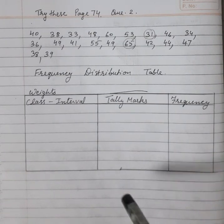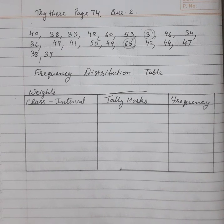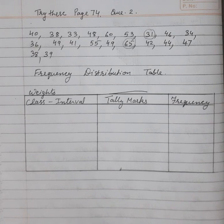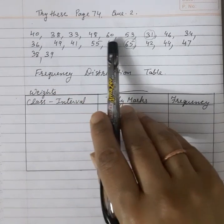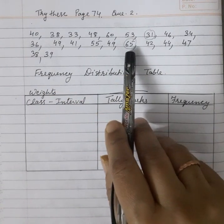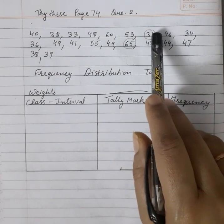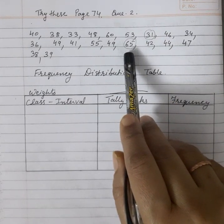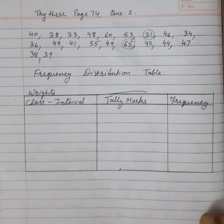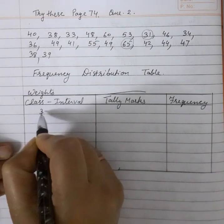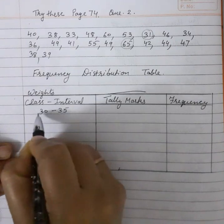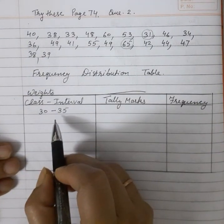What we will do is fix certain groups. In the question it is already given to make groups of 30 to 35, 35 to 40, and so on. First of all let us identify the smallest weight — the smallest one is 31 and the highest is 65. It means we have to get class intervals which include both 31 and 65. So let us start: the first class interval we can take is 30 to 35, so 31 will come in at least this interval.